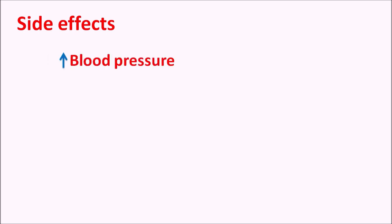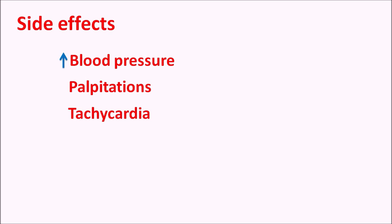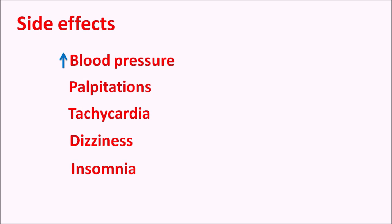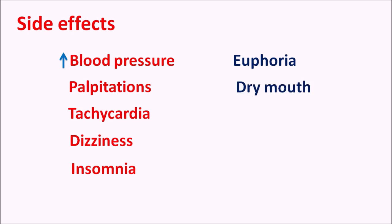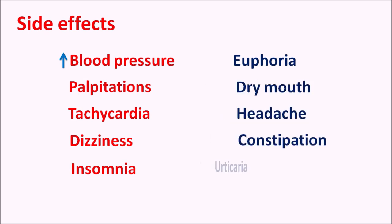The important side effects of Phentermine include: increased blood pressure causing hypertension; palpitations and tachycardia (increased heart rate); central side effects such as dizziness and insomnia. Because of insomnia, this drug should not be given after the evening — it is preferred to be taken in the morning before breakfast. It can also produce euphoria, which may result in addiction. Other side effects include dry mouth, headache, constipation, and urticaria.